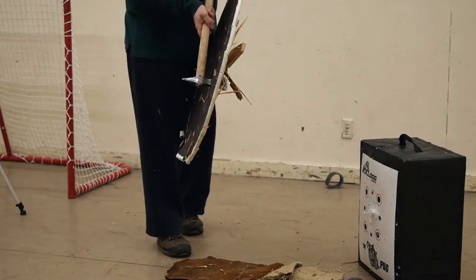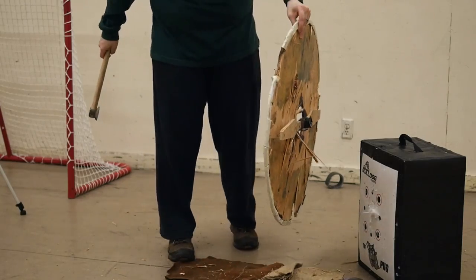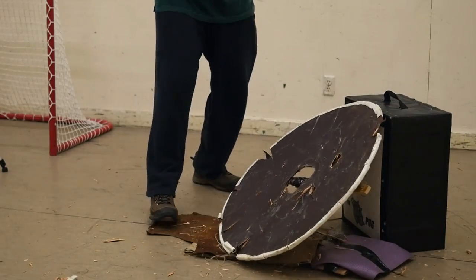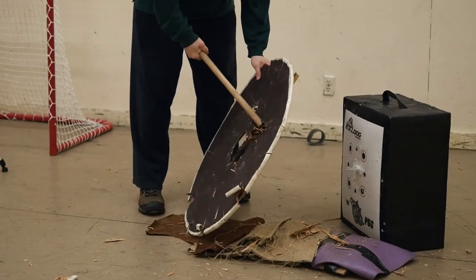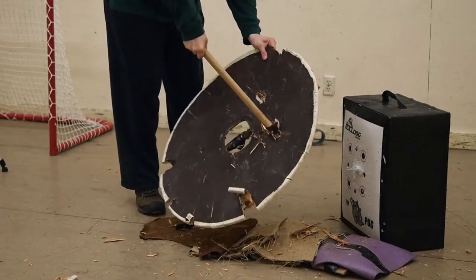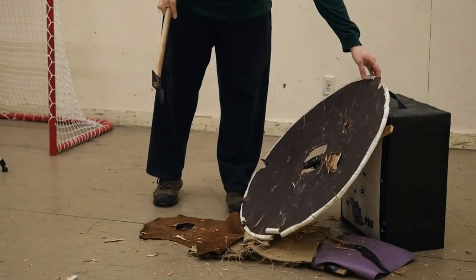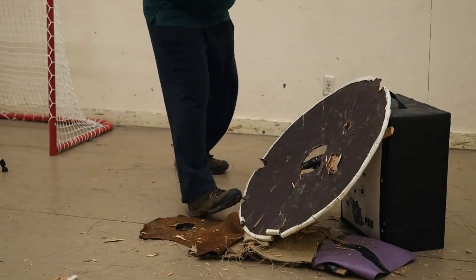Basically, as soon as one of the sides separate, or if the center grip breaks, from then on the shield loses a lot of its stability. You can see the axe just chews it up really quickly. So this is just shield massacre at that point.